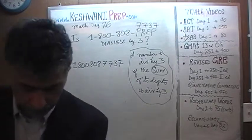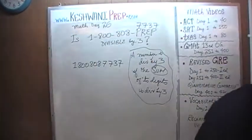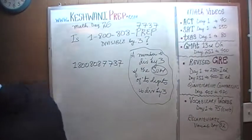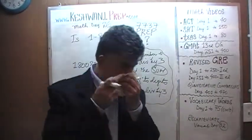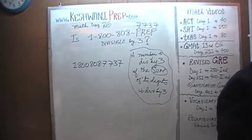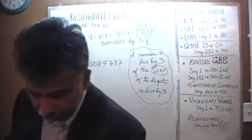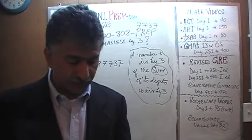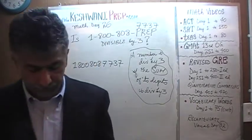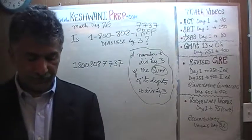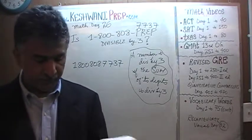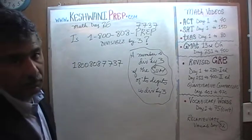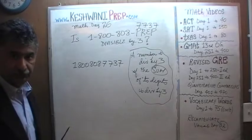Now, yesterday we learned divisibility rule. Excuse me. Yesterday we learned divisibility rule and two days ago, two days ago we learned our millions, billions and trillions. Millions, billions and trillions. Let's see, on day number 21, day number 22. On day number 22 we learned millions, billions and trillions. Let's see what this number translates into, shall we?